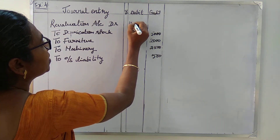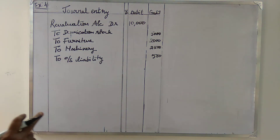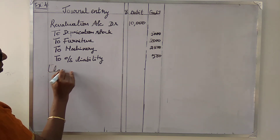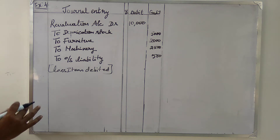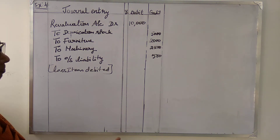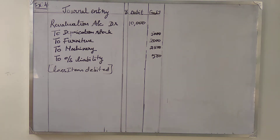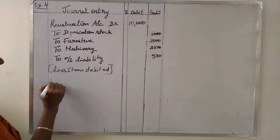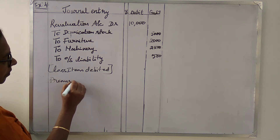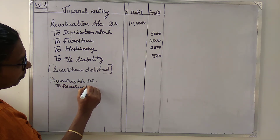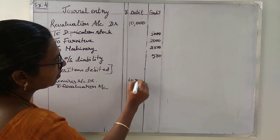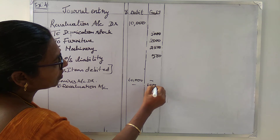All this came up to rupees 10,000. These are all loss items, debited. Now we go on to the credit side — that is the increase in the value of the asset. The premises rose up by 60,000, so the journal entry is: Premises account Dr to Revaluation account — 60,000 on both sides.